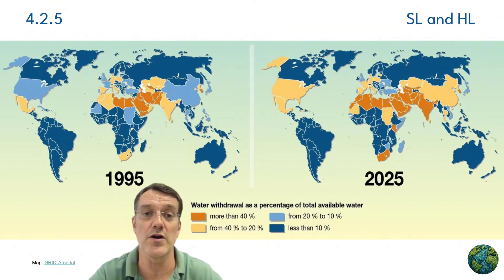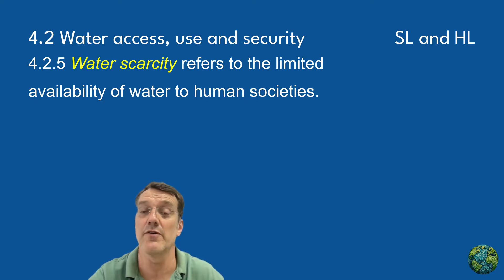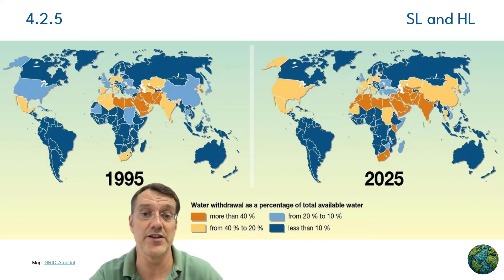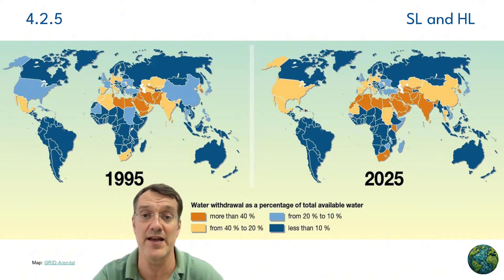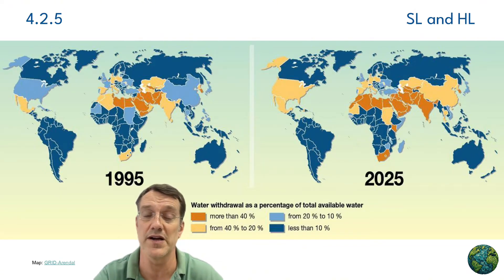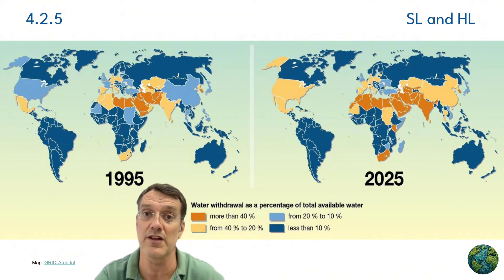These maps show changing global water stress patterns between 1995 and 2025. Water stress is measured as withdrawal percentage of the total available water. Orange and red indicate areas withdrawing more than 20% of the available water, approaching unsustainable levels. Notice how water stress is projected to intensify and expand, particularly in North Africa, the Middle East, Central Asia, and parts of North America and China. This trend reflects growing populations, economic development, and changing precipitation patterns due to climate change.